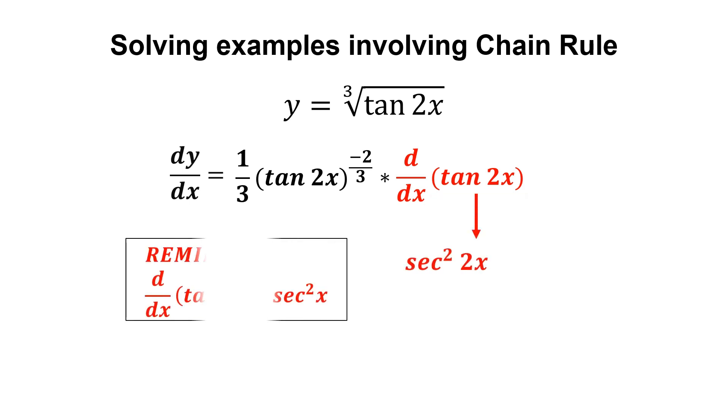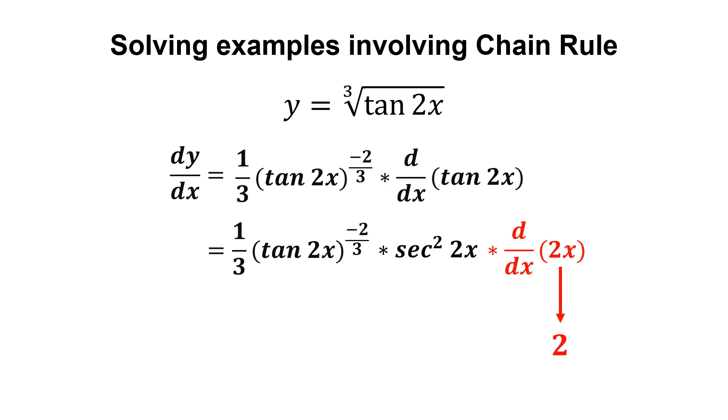Differentiate the whole thing, we get secant squared 2x, and multiply it with the derivative of the inner function, which is 2x. We get 2 for differentiating 2x. Lastly, we rearrange this expression. And we are done.